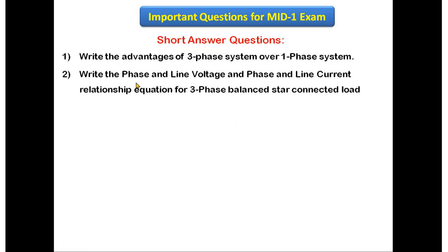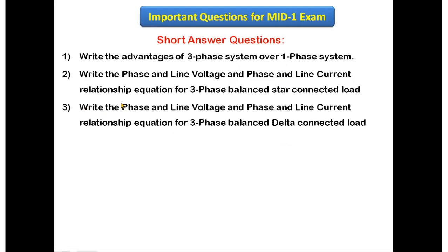The next question is: write the phase and line voltage, and phase and line current relationship equations for the three-phase balanced star connected load. For this question, you just have to write the equations — the relationship between line voltage and phase voltage, and line current and phase current. No derivation needed here; just write the relationships.